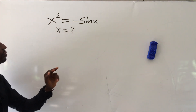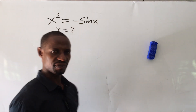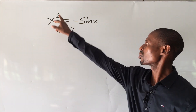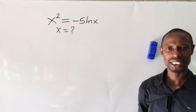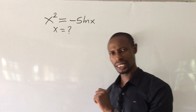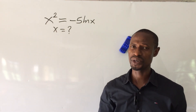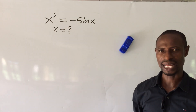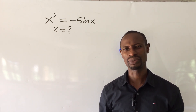The question reads: we have x to the power of 2 equal to minus 5 times ln of x. What would be the possible value of x? If you look at this equation, we are looking for two values of x that will satisfy it. If you look carefully, the left-hand side gives us an increasing function and the right-hand side gives us a decreasing function. So at what point will these two graphs meet?